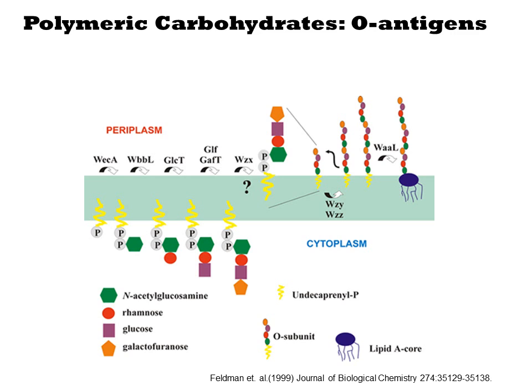In a gram-negative bacterium, this polymerization occurs on the outer membrane and gives rise to a surface coating of a particular structure of sugars. These capsular polysaccharides play major roles in the interactions between the bacterium and other organisms, such as during pathogenesis.